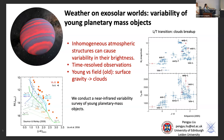These young planetary mass objects are exoplanet analogues because they are free-floating, so it is easier to observe them, and they can also be called young brown dwarfs. Different from field brown dwarfs, they have lower surface gravity and are younger, and therefore have a redder color. This indicates that there are thicker clouds in their atmospheres, and if the clouds are not homogeneously distributed, we can observe variability in their brightness.